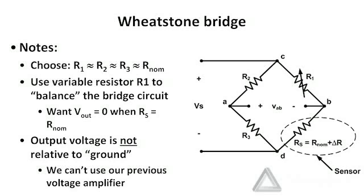If we pick R2 and R3 to be the same, then we want R1 to be approximately the nominal sensor resistance. However, it's difficult to pick a fixed resistor that exactly matches the nominal sensor resistance, so we'll implement a variable resistor at R1 that we can adjust to balance the bridge — meaning VAB equals zero at the nominal resistance. When I demo this, I'll show how I chose to implement this variable resistance R1.